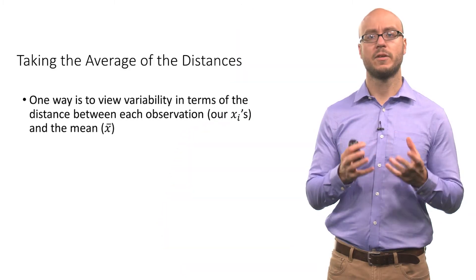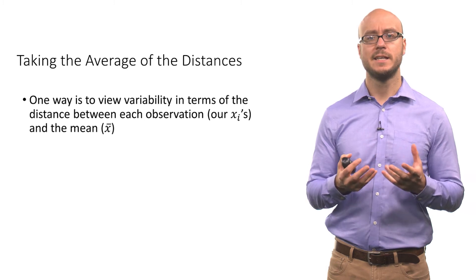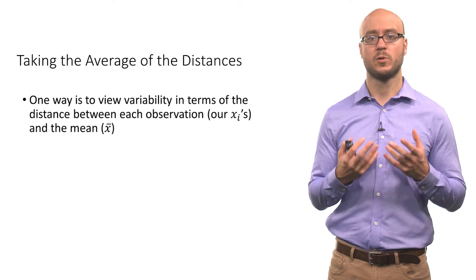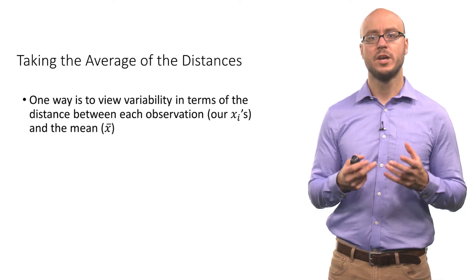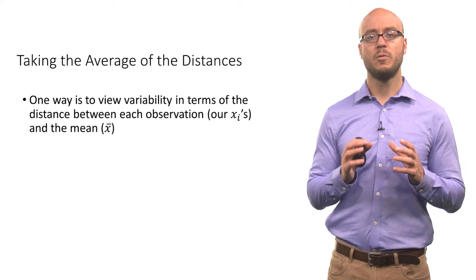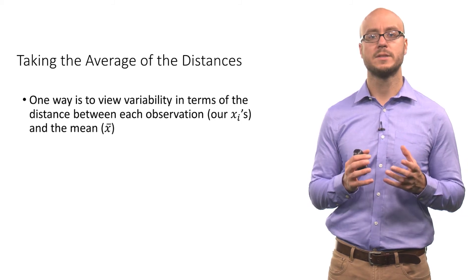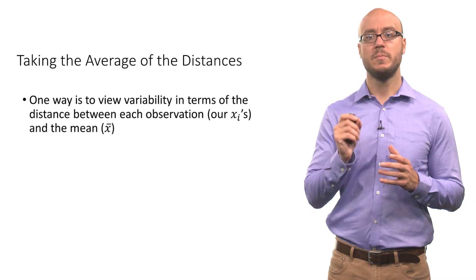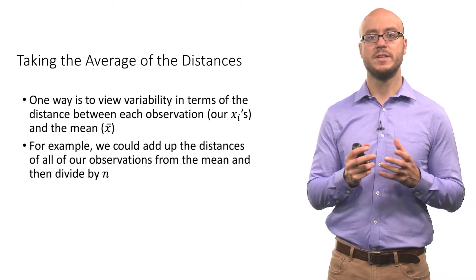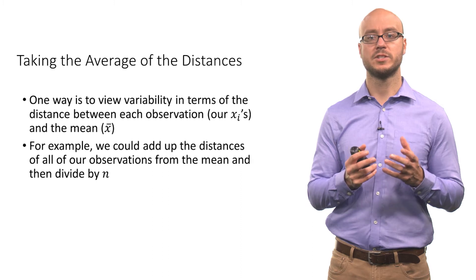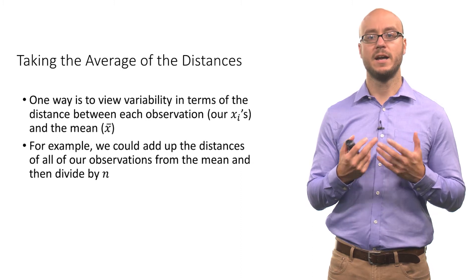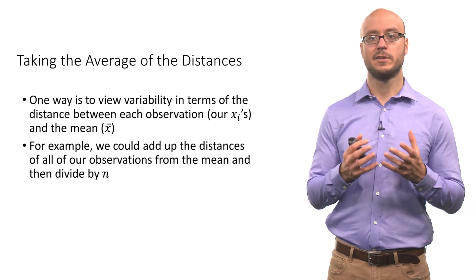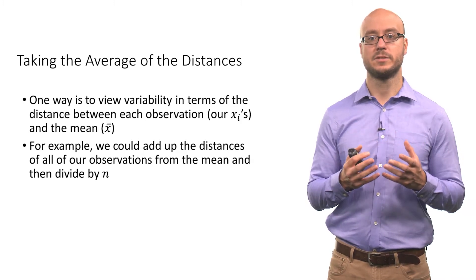One measure of variation we might consider is the average of the distances from the mean for our set of observations. We might view the variability of our data points in terms of the distance of each observation from the mean. For example, we could add up all the distances of our observations from the mean and then divide by the sample size. This can be considered looking at deviations from the mean.